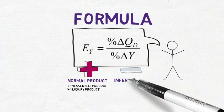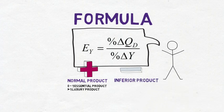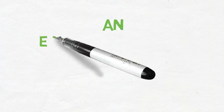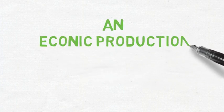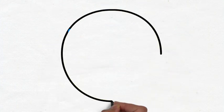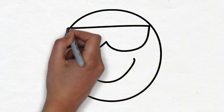If you are dealing with a negative value, you are dealing with an inferior good such as toilet paper. In the next episode we will look at cross-price elasticity and price elasticity of supply.